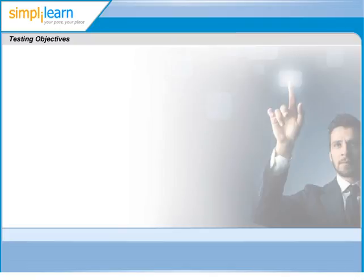Now that we have seen what testing is and the importance of testing, let us move ahead and understand what would be the main objectives of software testing. The first and foremost objective of any testing is to find defects, thereby preventing the probability of occurrence of defects in production.